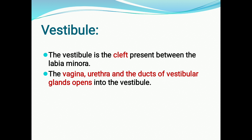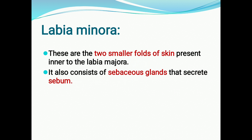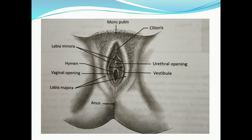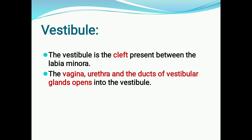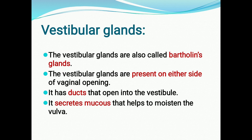The vestibule is the gap or cleft present between the labia minora. Into the vestibule, a few structures open: the vagina, which opens at the vaginal opening; the urethra, which opens at the urethral opening; and the ducts of the vestibular glands, which also open into the vestibule.